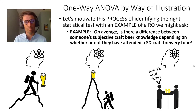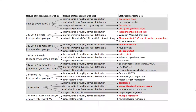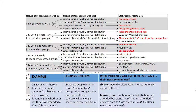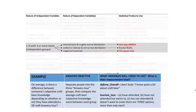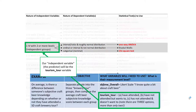We have three distinct separate groups — this is important. Using our handy cheat sheet to select the right statistical test, we recognize we want to separate people into three different brewery tour groups. We have a tourism_tour variable that captures that, and for subjective knowledge we have a SBJ_KNW_overall variable, which is a Likert scale — 'I know quite a bit about craft beer' — so we can compute and compare average scores.